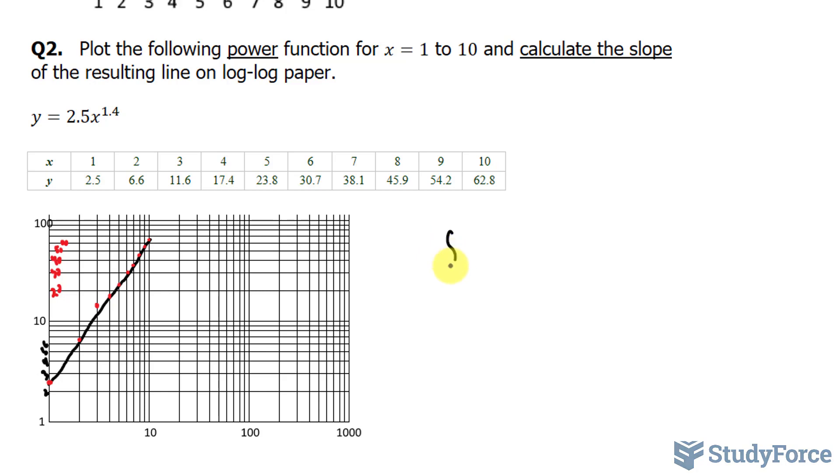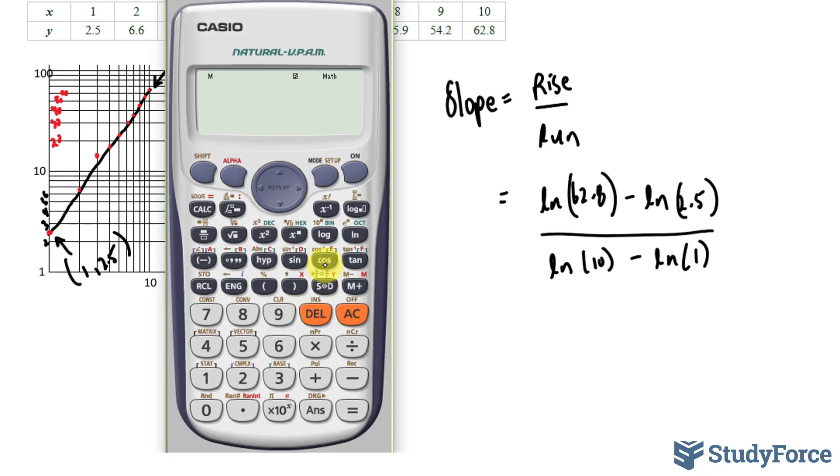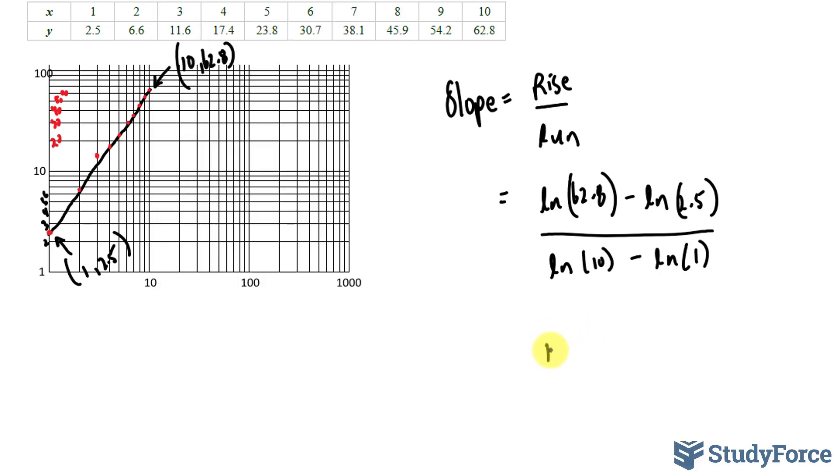Now I need to find the slope using rise over run. And both of the rise and the run now will be ln'd. So taking this point and this point, this had the coordinates 1 and 2.5. This one had the coordinates 10 and 62.6. Subtracting ln of 62.8 minus ln of 2.5 over ln of 10 minus ln of 1 gives us the slope of 1.4. So the slope represented by the letter M is 1.4. And there you have it. Two examples on how to plot and calculate slope of exponential functions.